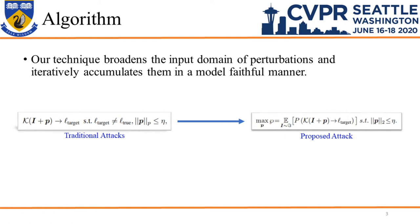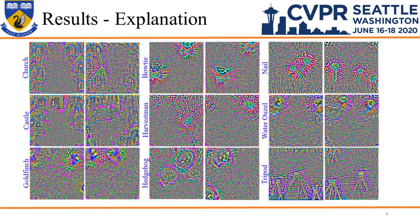The contrast of our formulation with the traditional objective can be seen in the shown equations. Here are some perturbations computed by our technique for the mentioned target labels. Visually salient features of each class are clearly visible, which help in explaining the semantics learned by deep models.